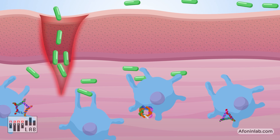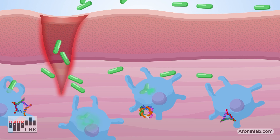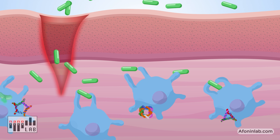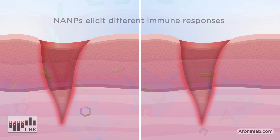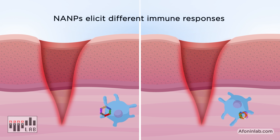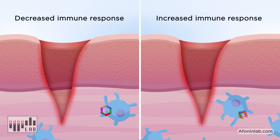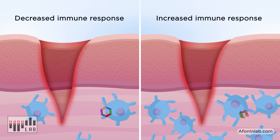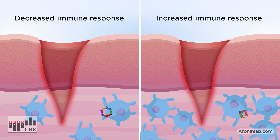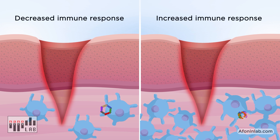Our research has demonstrated that NAMPs can be designed to communicate with the innate immune system. When delivered into cells, NAMPs will interact in various ways with the innate immune system. We can use this as a form of molecular language to communicate with the immune system and choose the level of immune response.